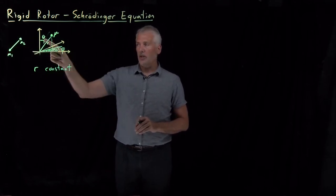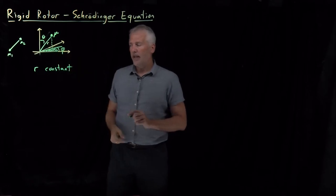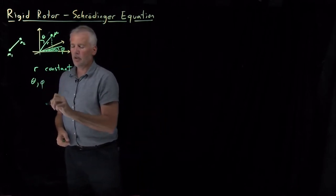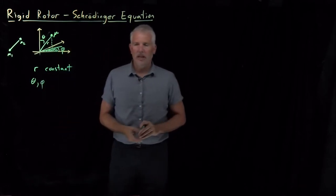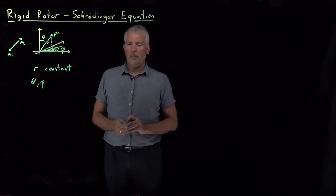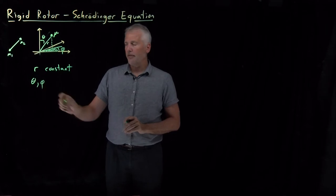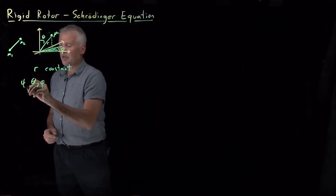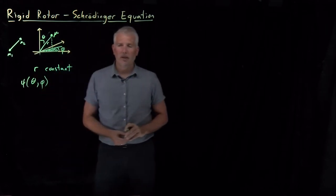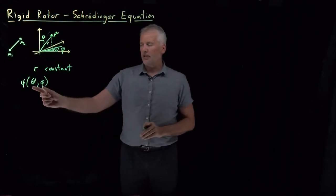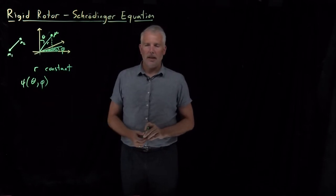We're going to allow theta and phi to change. The two variables that describe the state of this system are theta and phi, and the state of the system will be described quantum mechanically by a wave function that depends on theta and on phi.